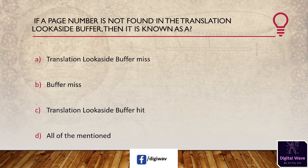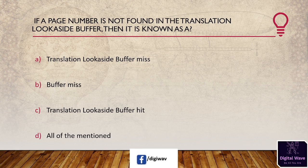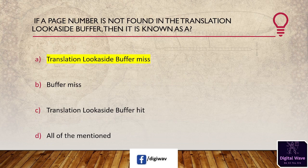Next question: if a page number is not found in the Translation Look-aside Buffer, then it is known as — options: Translation Look-aside Buffer miss, buffer miss, Translation Look-aside Buffer hit, all of the mentioned. The right answer is Translation Look-aside Buffer miss. A TLB miss arises when the page table entry needed to translate a virtual address to a physical address is not available in the TLB.